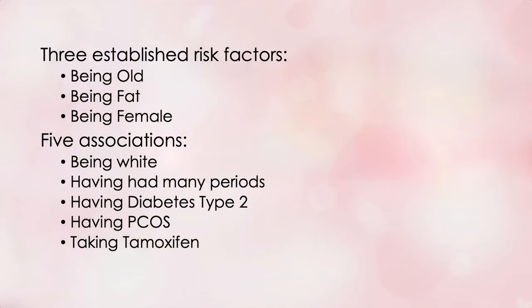The fifth association is the use of tamoxifen for treating or preventing breast cancer. Tamoxifen acts like an estrogen on your inner uterine lining, thickening it just like estrogen does. Use of tamoxifen for either treatment or prevention of breast cancer increases your risk of endometrial uterine cancer by as much as sixfold. As I always say, your menopause management is always going to boil down to trade-offs. So that leaves you with three established risk factors and five associations for endometrial uterine cancer: being old, being fat, and being female as the risk factors; and being white, having had many periods, having type 2 diabetes, having PCOS, and taking tamoxifen as the associations.